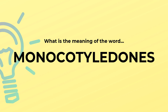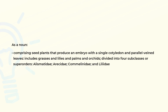What is the meaning of the word monocotyledons? As a noun, comprising seed plants that produce an embryo with a single cotyledon and parallel veined leaves. Includes grasses and lilies and palms and orchids. Divided into four subclasses or superorders.